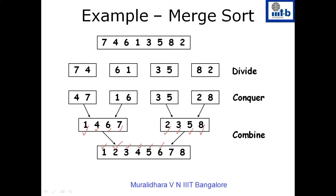We compare seven and eight — seven is smaller. So we reach the end of the left list. Once we reach the end of a list, we write whatever is remaining in the other list directly to the output.